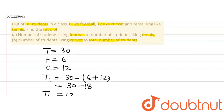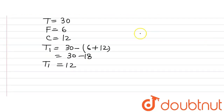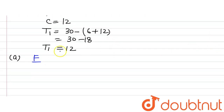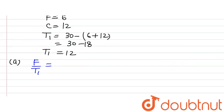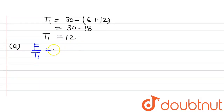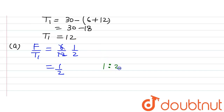Now let's move to the question. Part A says find the ratio of number of students liking football to the number of students liking tennis, that is F divided by T1. F is equal to 6 and T1 is equal to 12, so 6 divided by 12. Dividing by 6, we get 1 divided by 2, so the ratio will be 1:2.